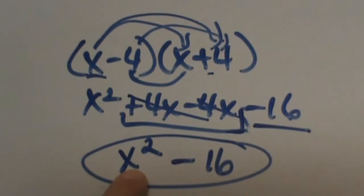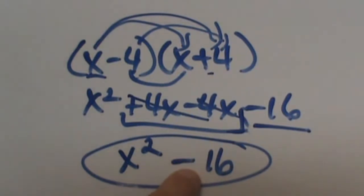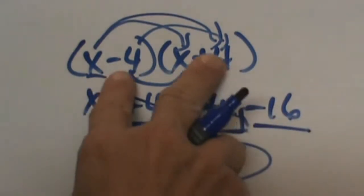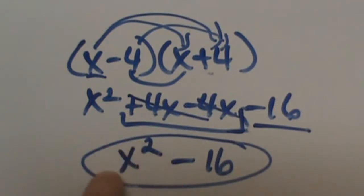This is called the difference of two squares. We have two perfect squares: x squared is a perfect square, 16 is a perfect square, and difference means subtraction. So when you multiply these together you are going to end up with a binomial answer.